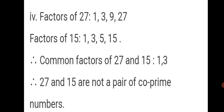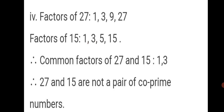For 27 and 15: factors of 27 are 1, 3, 9 and 27; factors of 15 are 1, 3, 5 and 15. The common factors are 1 and 3, so 27 and 15 are not a pair of co-prime numbers. The rule: first list the factors, find common factors, then give the final answer. If 1 is the only common factor they are co-prime; if there are more common factors besides 1, they are not co-prime.